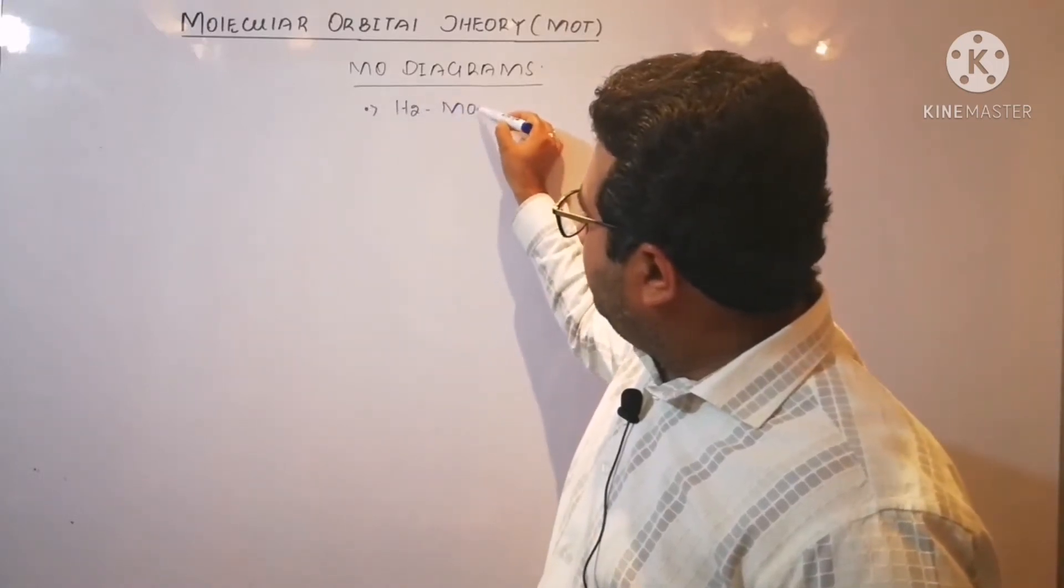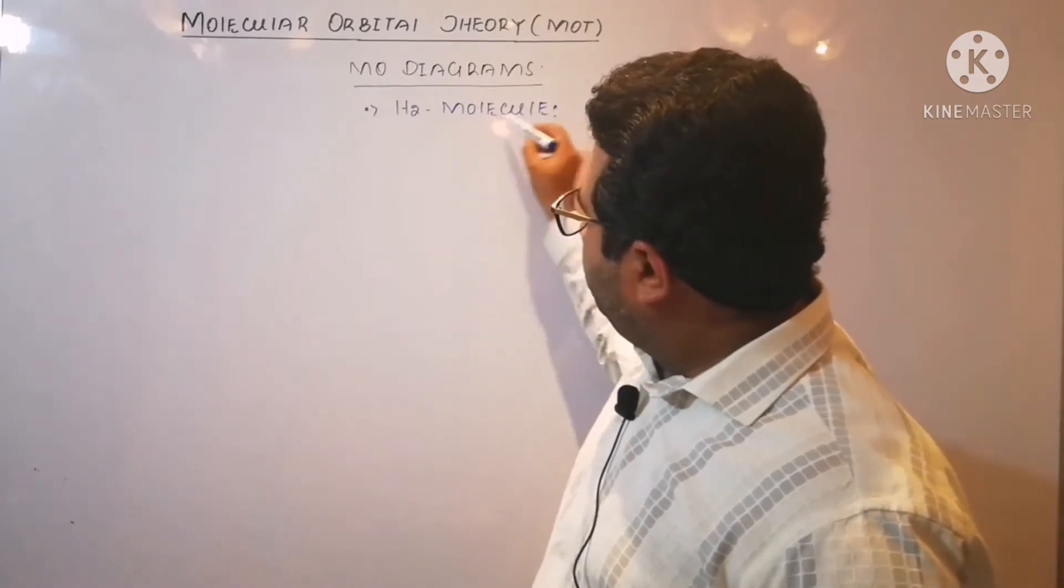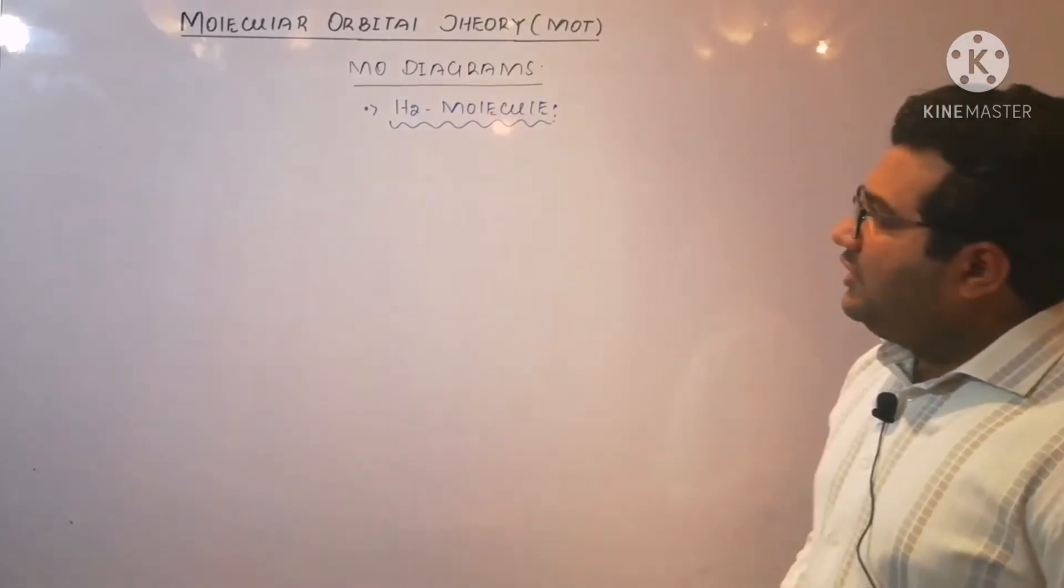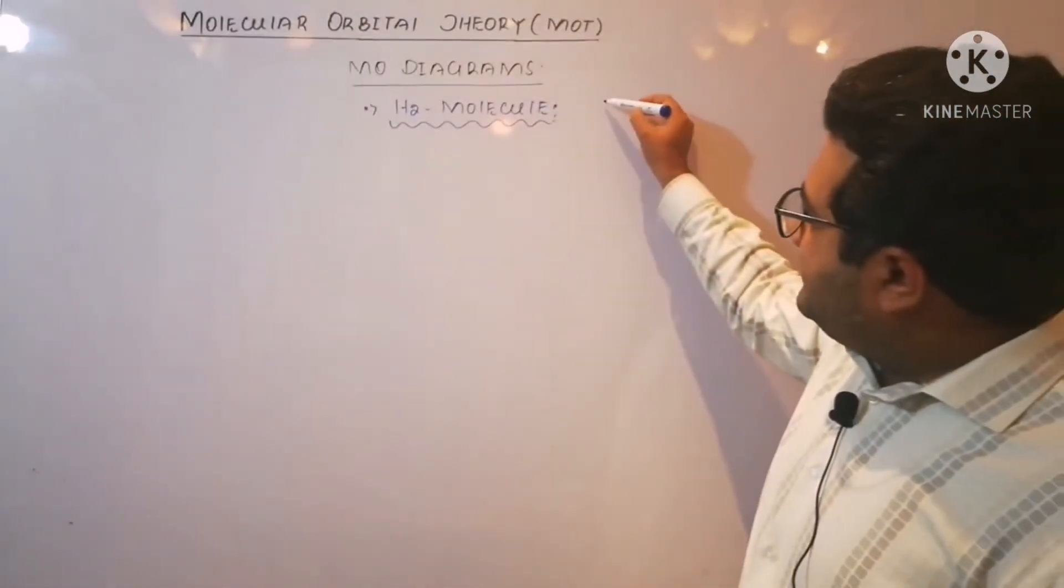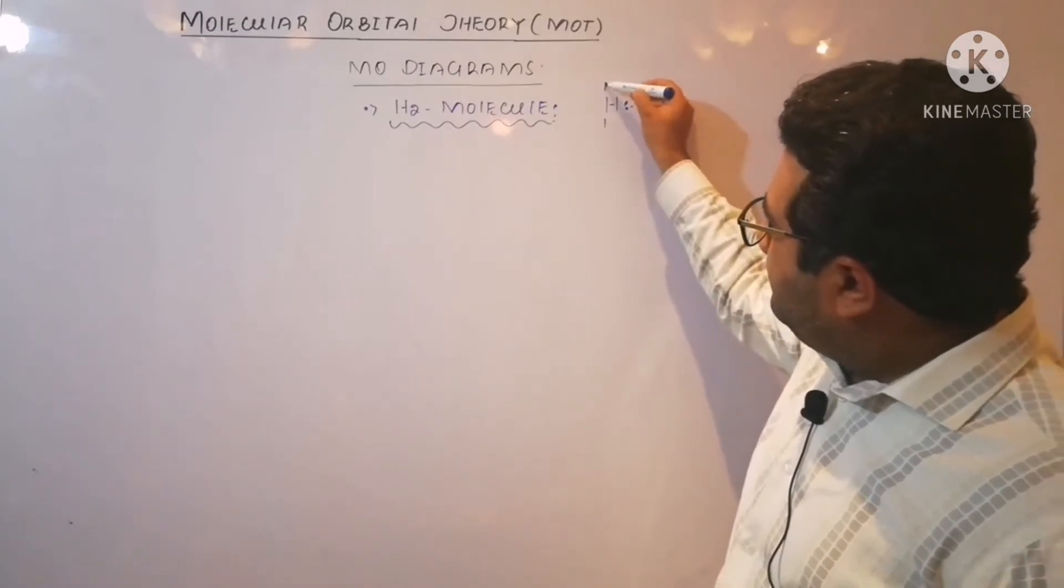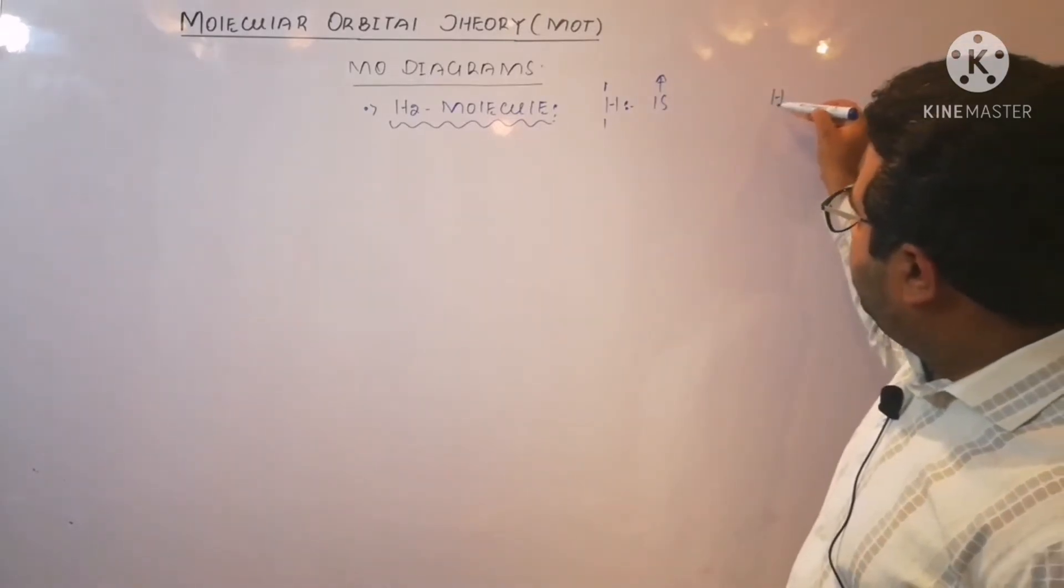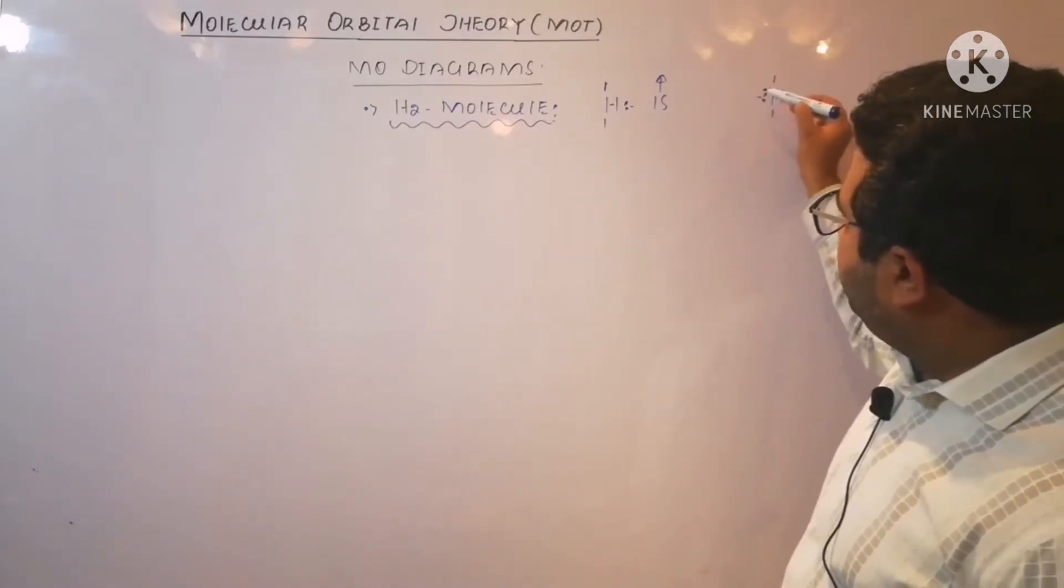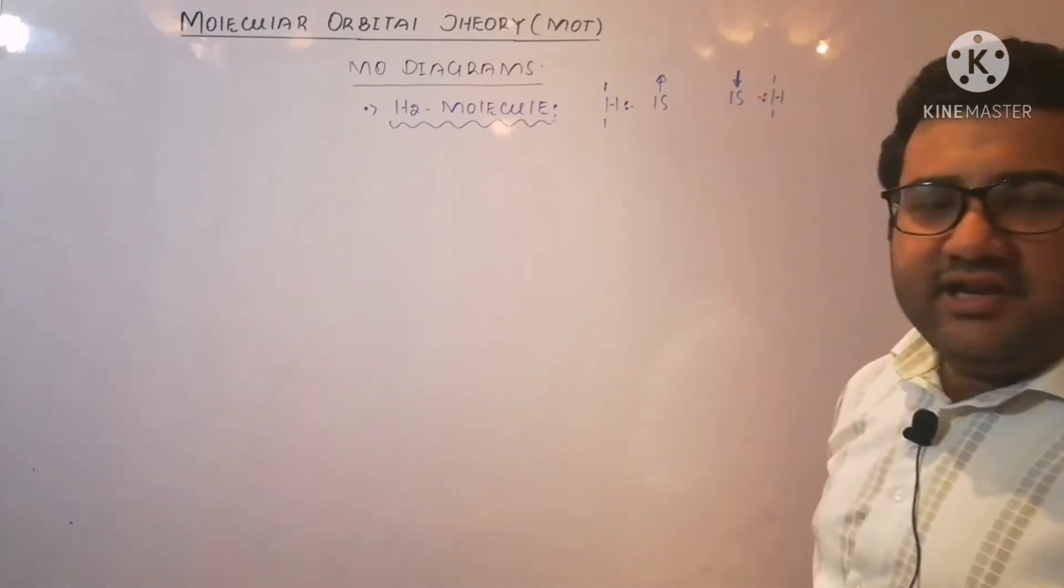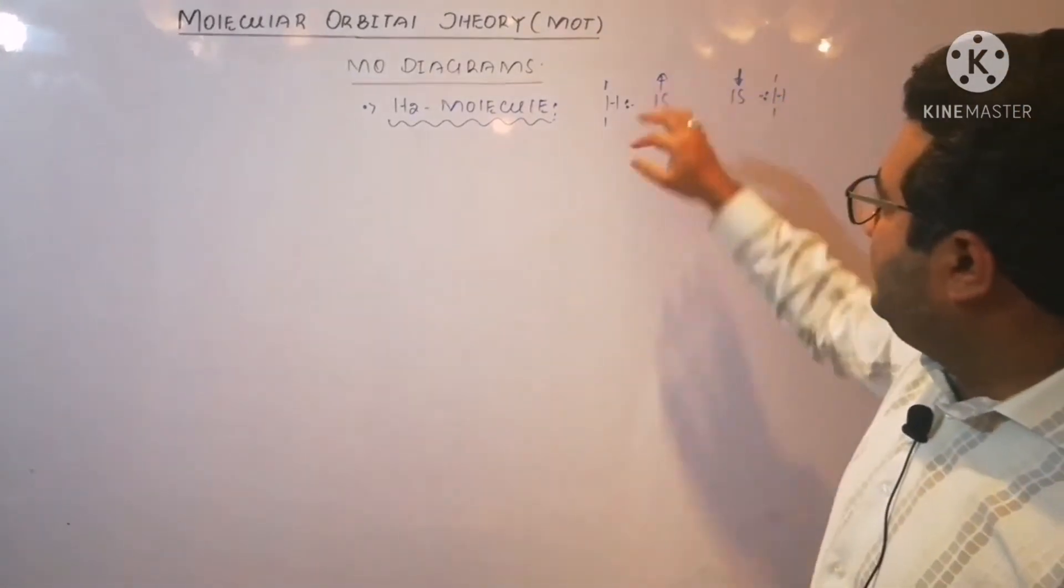H2 molecule is made up of two hydrogen atoms. Let us write down their configuration. It is 1s1. And there will be a second hydrogen atom, its configuration is also 1s1. But keep one thing in mind: we will show the opposite spin of the two electrons.